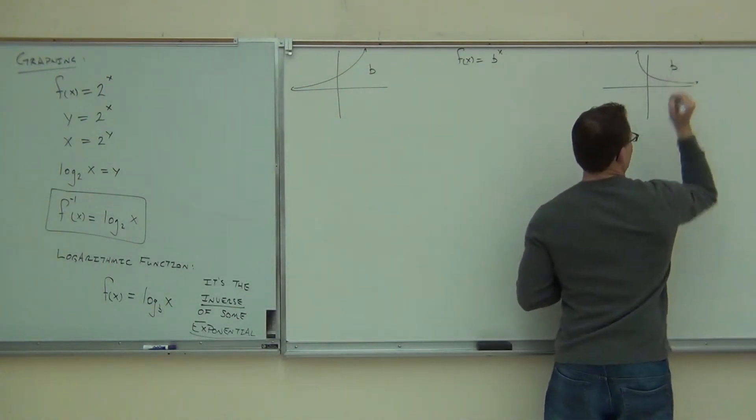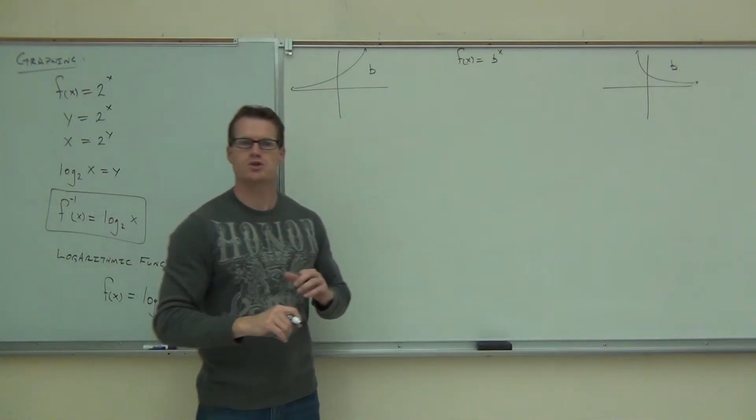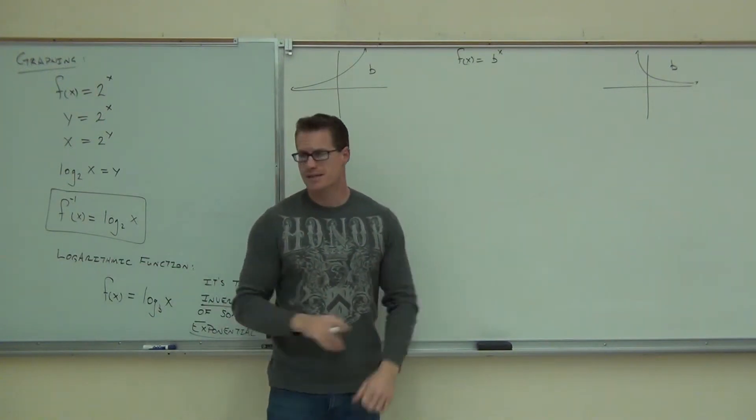One of them, the base was greater than one. One of them, the base was less than one. But the base was always greater than zero. It was never negative. If it was negative, it would be below the x-axis. You'd have a negative in front of it.